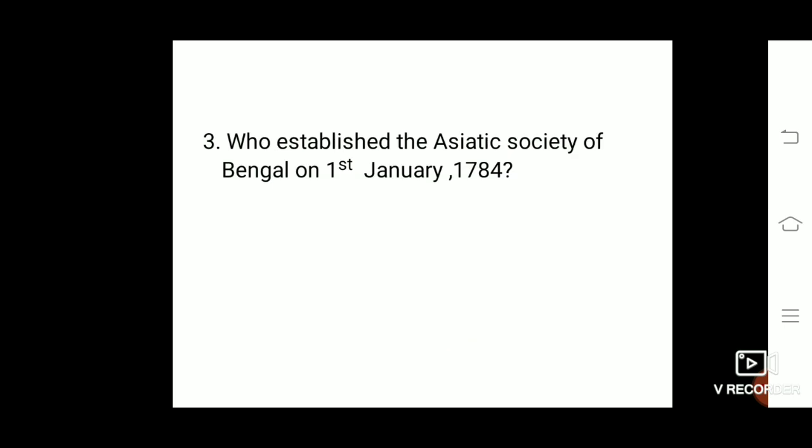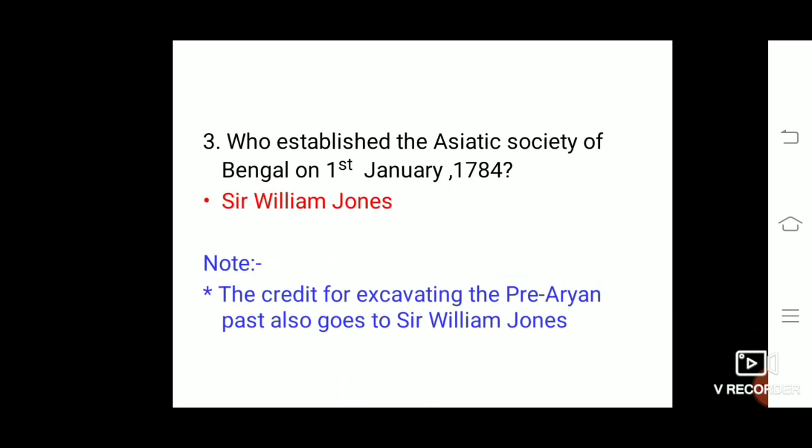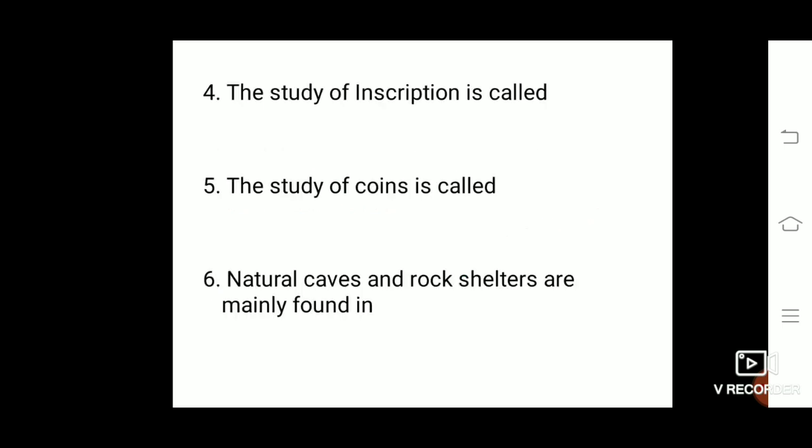Next: who established the Asiatic Society of Bengal on 1st January 1784? The founder of the Asiatic Society of Bengal is Sir William Jones. Such questions can also be asked as 'who is the founder.' The credit for exhibiting the Pre-Aryan past also goes to Sir William Jones. Next: the study of inscriptions is called epigraphy.